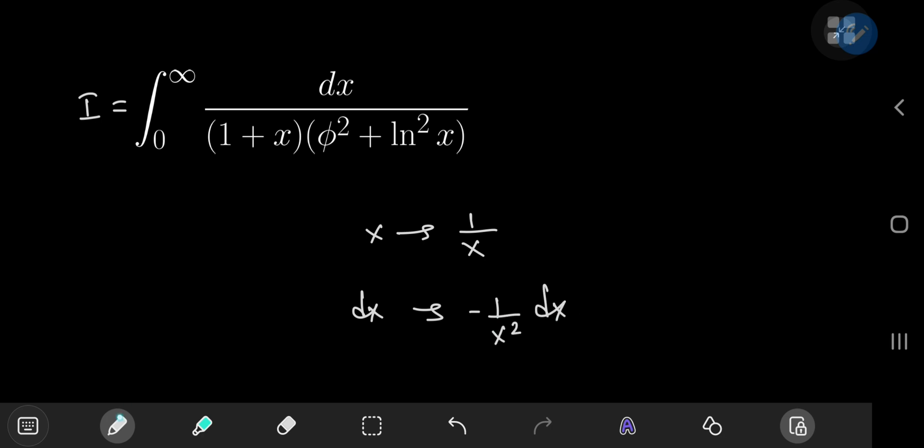As far as the limits of integration are concerned, as x approaches 0 from the right, 1 by x approaches positive infinity. Similarly, as x approaches infinity, 1 by x approaches 0. So this implies that i equals the integral now from infinity to 0.